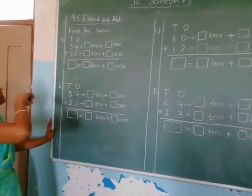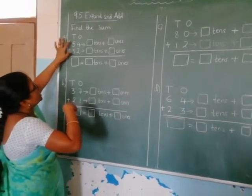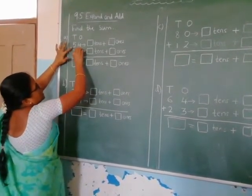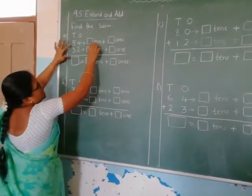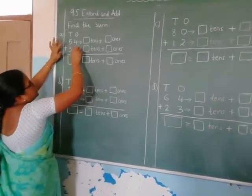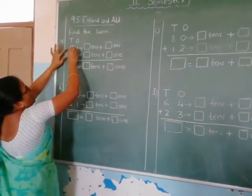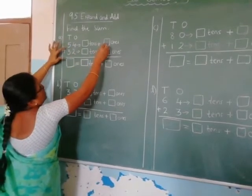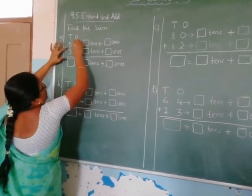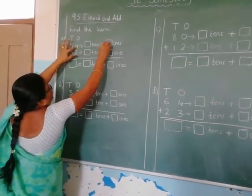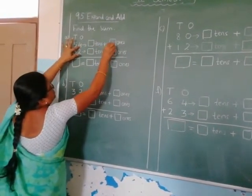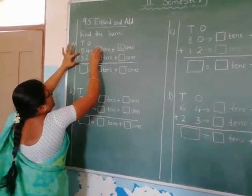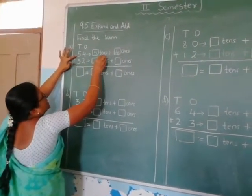First one. Here, children, here is what we have to do. You have to expand this and write it in tens and ones. What is the number in the ones place? It is 4. So 4 is in the ones place — write 4 here. Now the tens place: the number is 5. Write 5 here. So that is 5 tens.